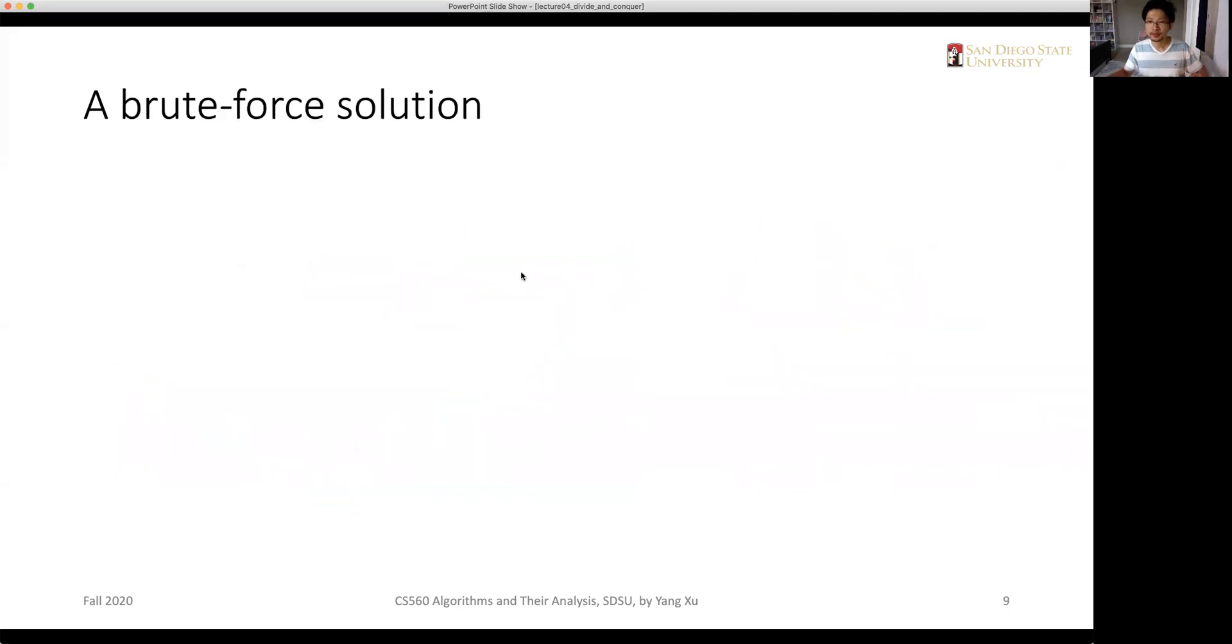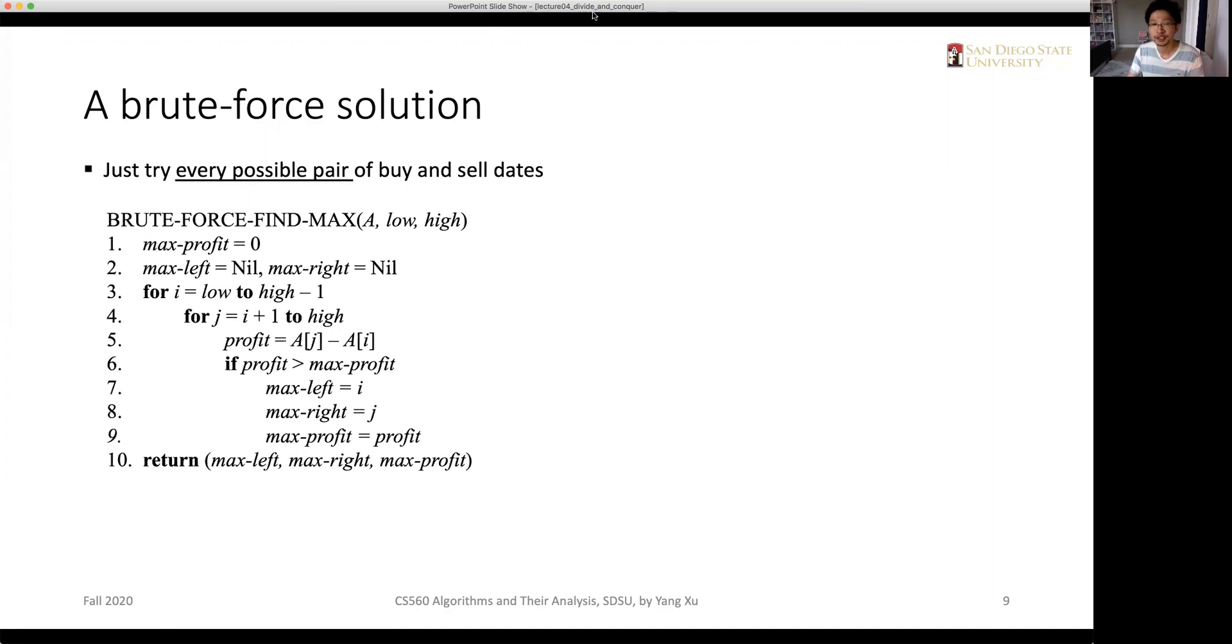So there's always brute force solutions to basically all kinds of problems. So in this case, why not we just go through all possible buy in and sell out data pairs? So in this brute force solution of maximum subarray problem, we basically want to examine all possible pairs of buy and sell dates. So we have an implementation in a pseudo code like this. The function brute force find max takes an input, the input array that contains the prices for all the days. And the low and the high is the starting position and ending position of the price tables. So low is the leftmost and high is the rightmost.